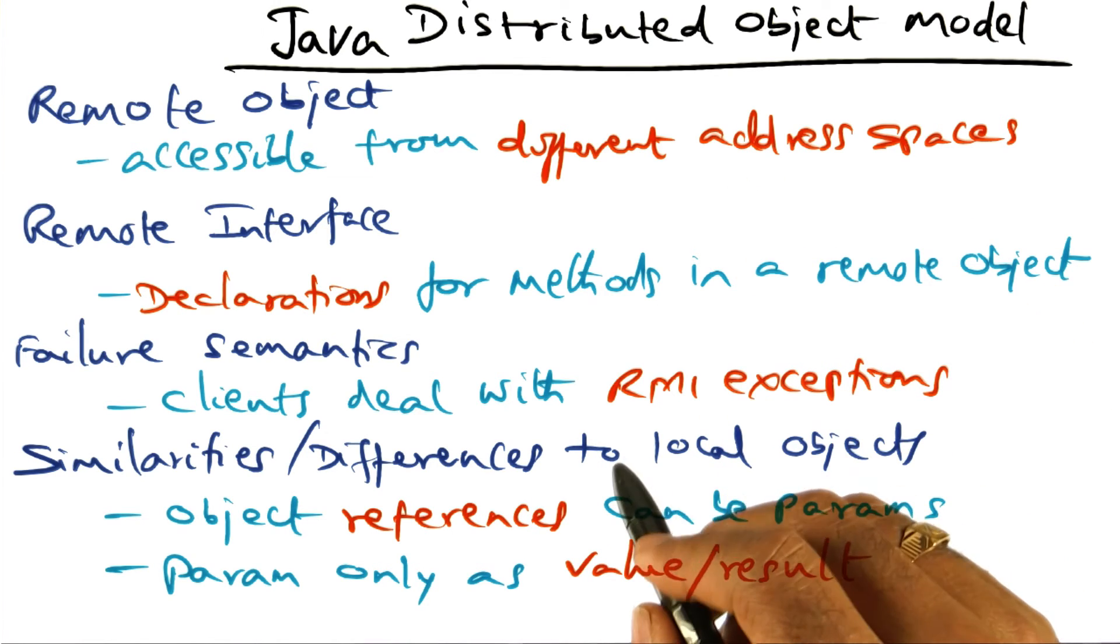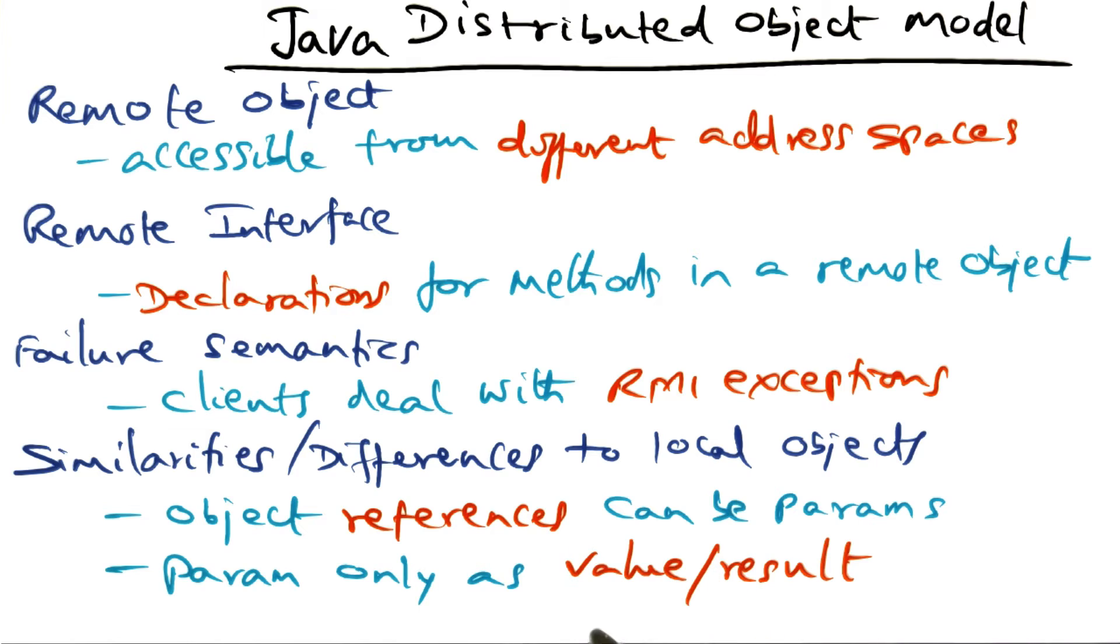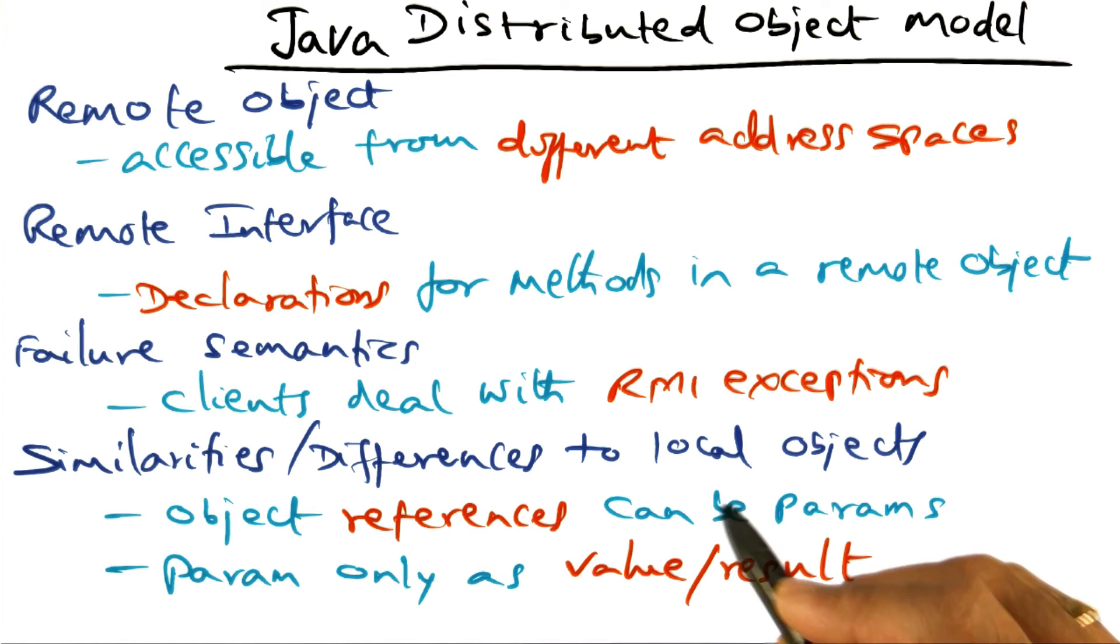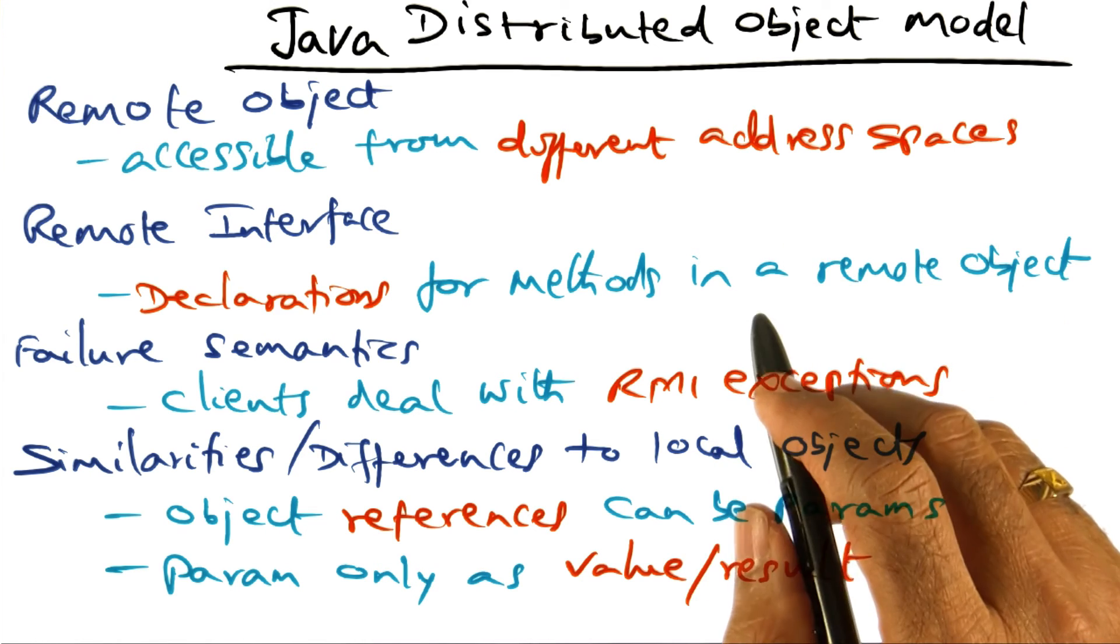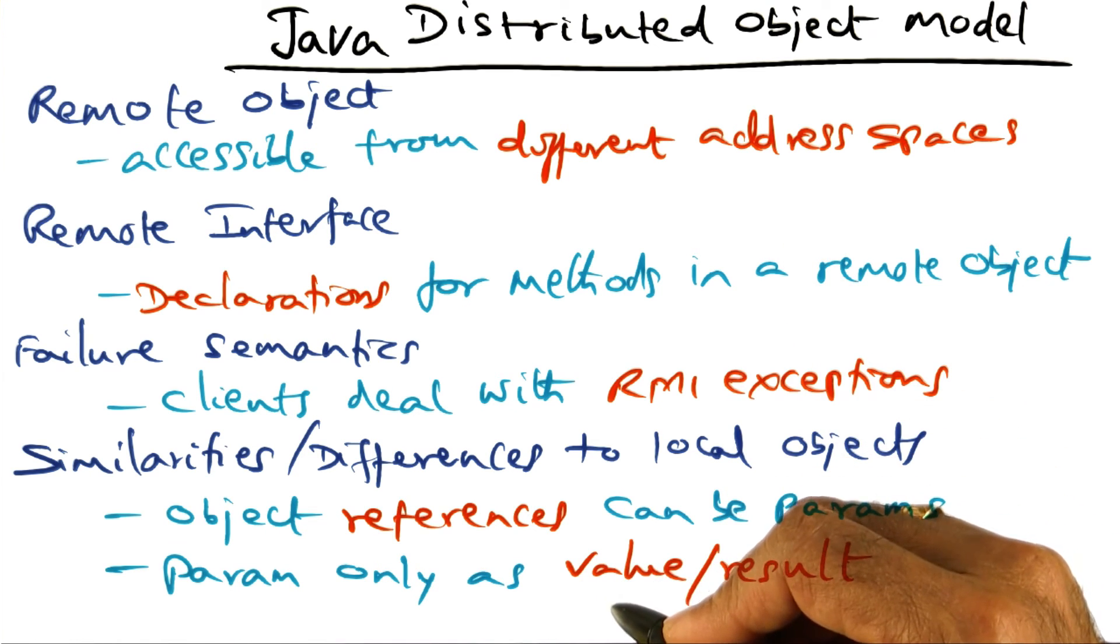But in the distributed object model, because the object references are passed as value result, it's going across the network and is passed as value result, meaning the copy of that object is actually sent over to the invoked method. And that invoked method is seeing the copy of that object, and even though there is a reference being given, the reference is actually converted into value result in the parameter passing mechanism for the distributed object model. So that's a fundamental difference in parameter passing.